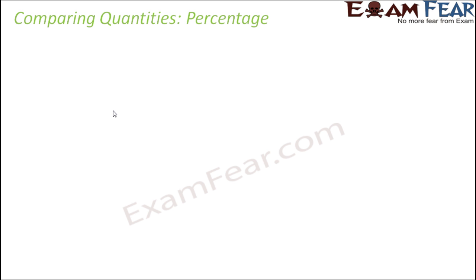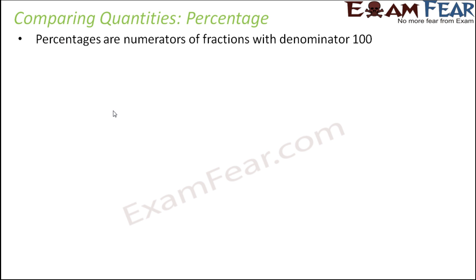Let us now talk about the next parameter to compare quantities, and that is percentage. So what is percentage? Let's start from the very beginning. The word percentage is derived from a Latin word which is 'per centum.' Centum is nothing but 100, so it basically means per 100 — that means how much it is out of 100. That is called percentage.